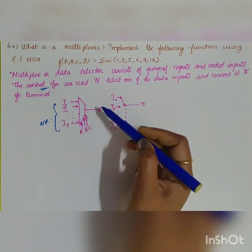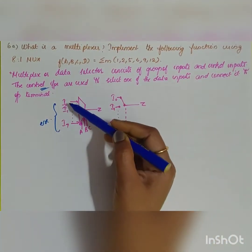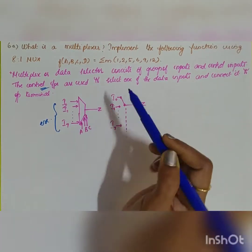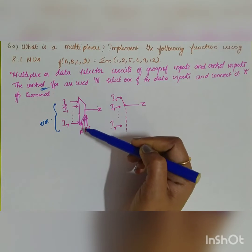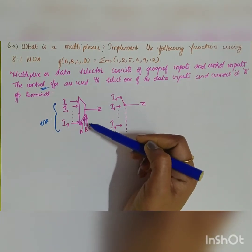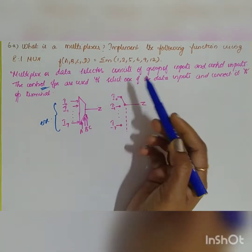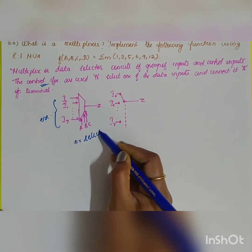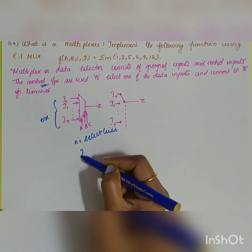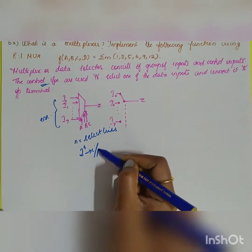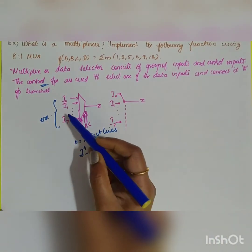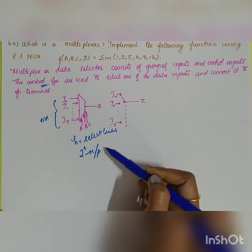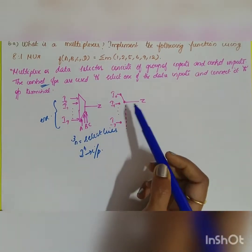Here is an example of a multiplexer. Inputs 0 to 7 means an 8-to-1 mux — 8 inputs, 1 output, and 3 select lines. In general, if you have n select lines, 2 to the power n will be your number of inputs. In this case, n equals 3, so 2 to the power 3 equals 8 inputs.